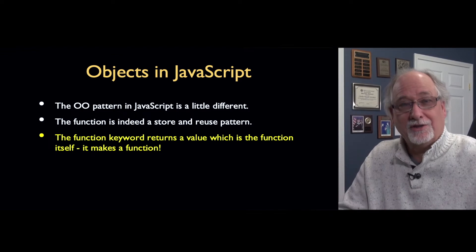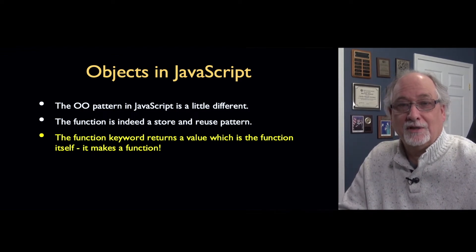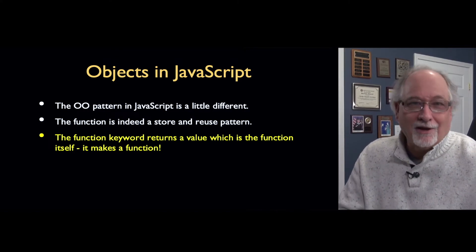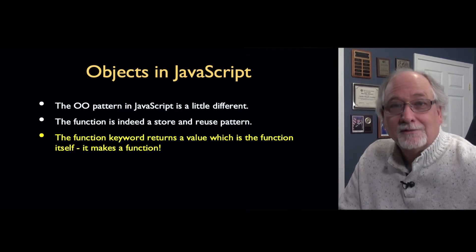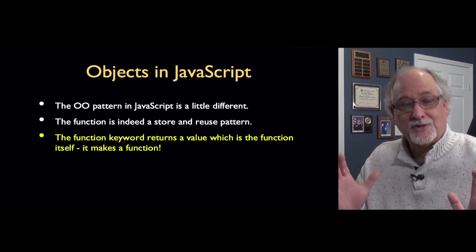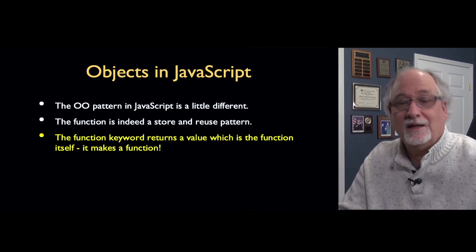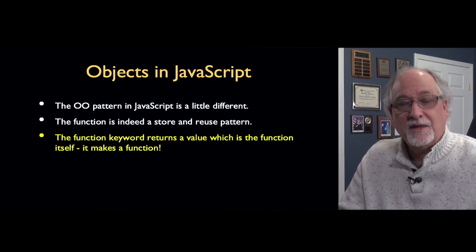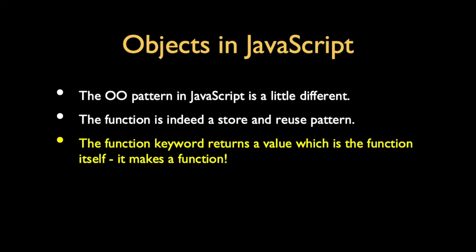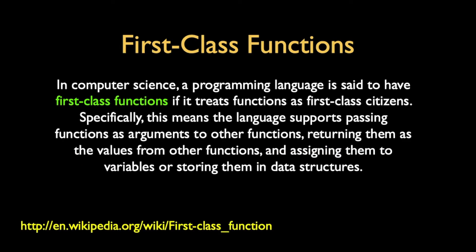Objects in JavaScript are a little different from objects in Python, PHP, Java, or C++. The key thing is it certainly is a storing-reuse pattern — a mechanism to create data and code and put it into one reusable thing. But the key thing is that the function keyword is actually an executable statement. You can use the function keyword and the function, in a sense, causes code to come back to you. You can have the function create code and assign it into a variable. These are called first-class functions, and it has to do with the symmetry between code and data.